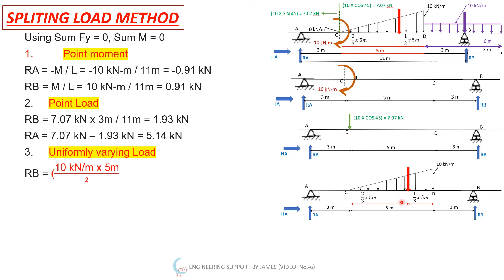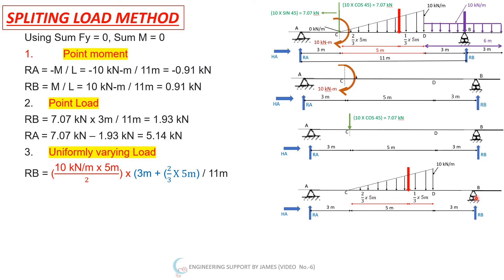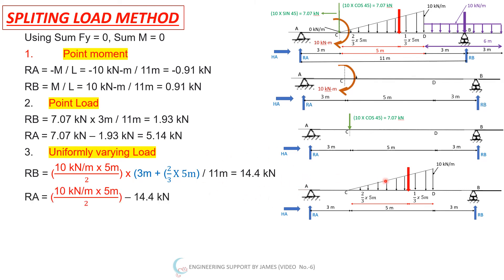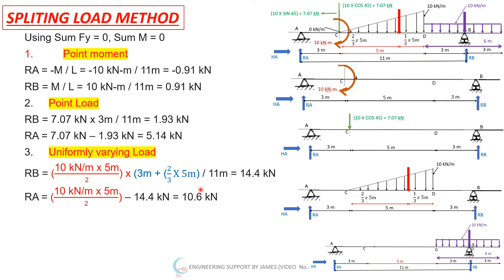For the uniformly varying load: total load = 10 kN/m × 5/2 = 25 kN, acting at 3 m + two-thirds of 5 m from A. RB = 25 × (3 + 2/3 × 5) / 11 = 14.4 kN. RA = 25 − 14.4 = 10.6 kN.